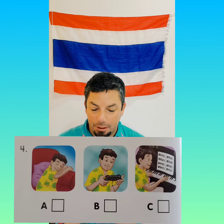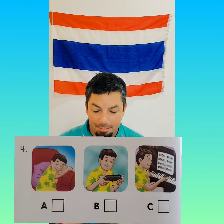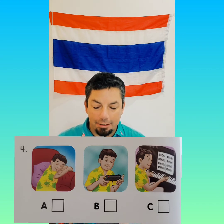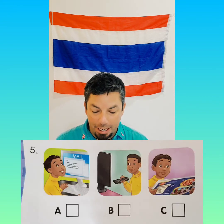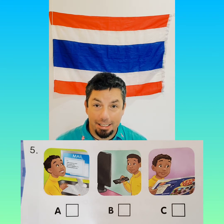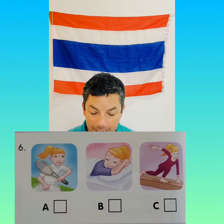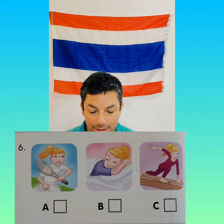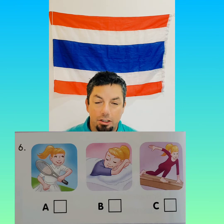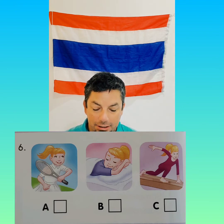Number four: What does he do on the weekend? He usually takes a nap. What does he do on the weekend? He usually takes a nap. Number five: What does he do on the weekend? He always studies English. What does he do on the weekend? He always studies English. Number six: What does she do on the weekend? She sometimes plays tennis. What does she do on the weekend? She sometimes plays tennis.